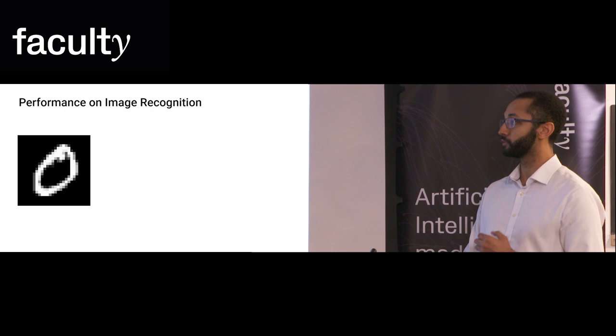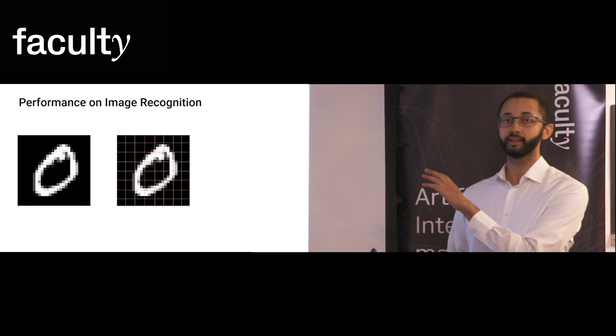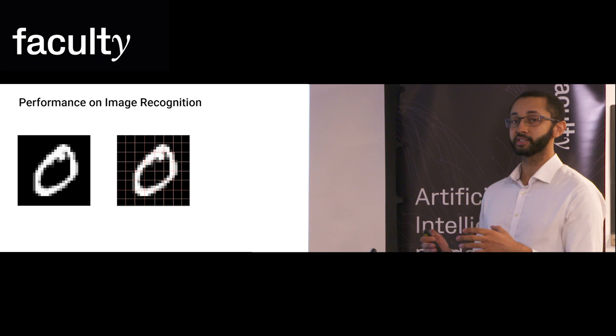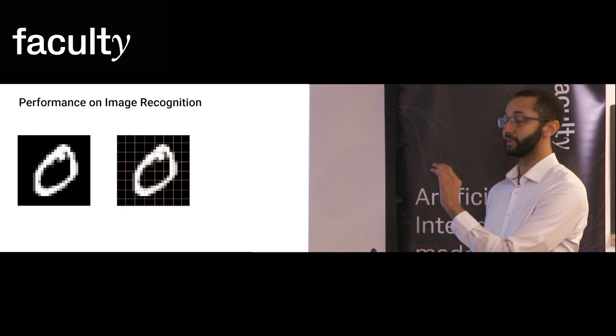For my algorithm, we tested this out on a handwritten digit recognition neural network. How the algorithm works is first we divide the image up into blocks of pixels called superpixels. By doing this, we reduce the number of features significantly. We then want to find the importance of each of these superpixels.